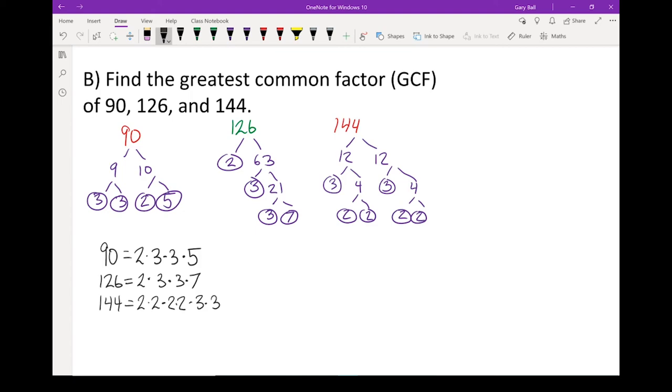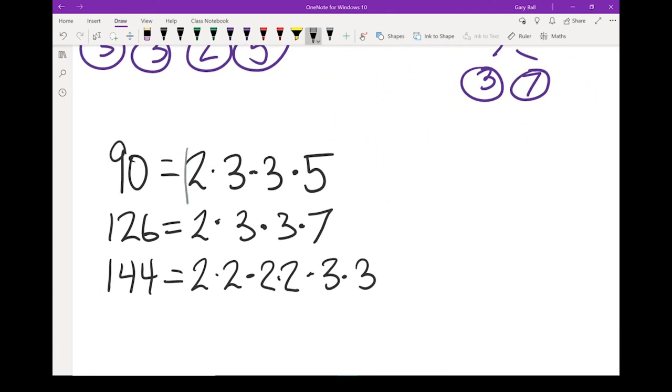Now let's look for factors that are common to all three. I've got a 2 in all three. I've got more 2s down in 144, but 90 and 126 don't have any more 2s, so that's all I've got for common factors. If I look, they've all got 3s. So I've got one set of 3s. I've got enough for a second set of 3s in all three. And that's it. 90 is the only one with a 5. 126 is the only one with a 7, so those are not common factors.